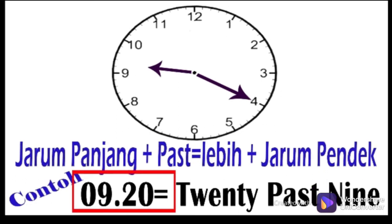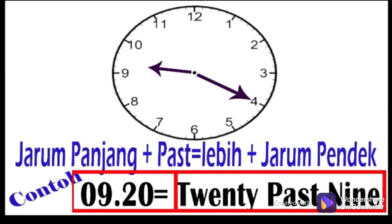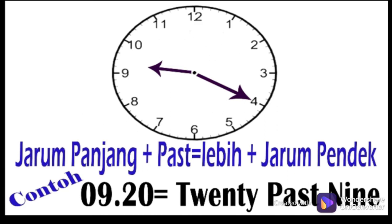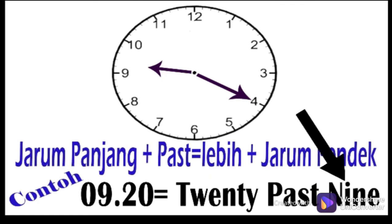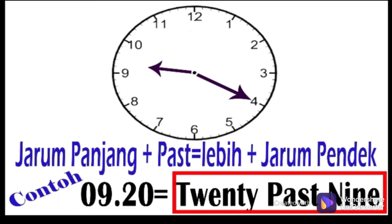Pukul 9 lebih 20 menit, bahasa Inggrisnya disebut '20 past 9'. Kata 20 adalah terjemahan dari angka 20, yang merupakan jarum panjangnya dalam penyebutan jam ini. Kata 'past' artinya lebih, dan kata 9 adalah terjemahan dari angka 9, yang merupakan jarum pendek dalam penyebutan jam ini. Jadi, jam 9 lebih 20 menit dalam bahasa Inggris disebut '20 past 9'.